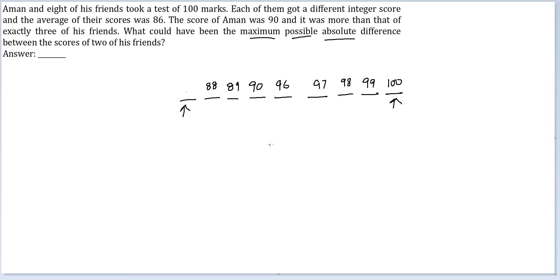Now, I know the average to be 86. Using assumed mean, I see a deviation of 2 here, 3 here, 4 here, 10 here, 11 here, 12 here, 13 here and 14 here.